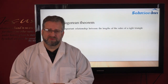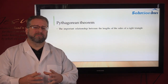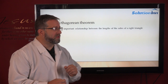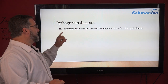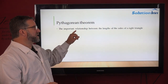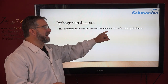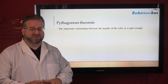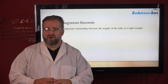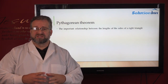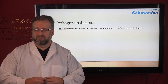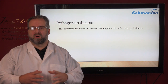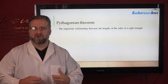The first thing we've got to understand is what the Pythagorean Theorem is. The Pythagorean Theorem describes the important relationship between the lengths of the sides of a right triangle. Over 2,000 years ago the Greeks discovered this important relationship, so it's a long-tested theorem.